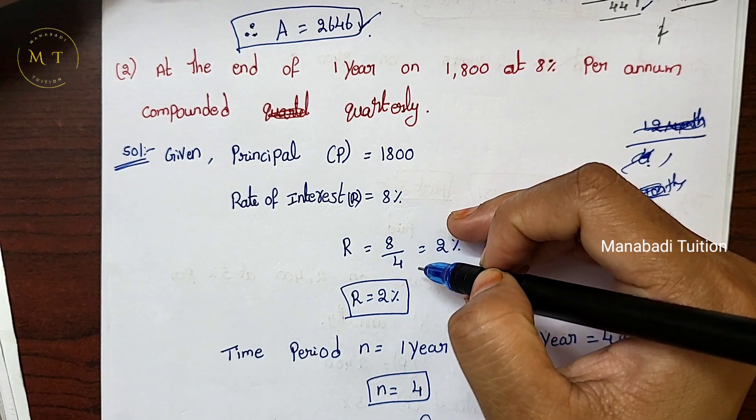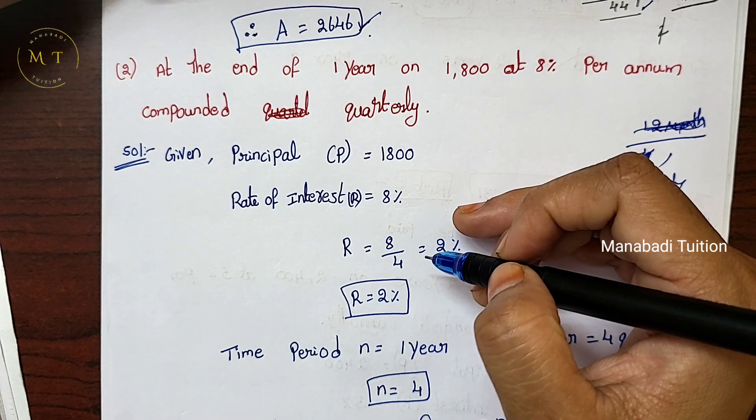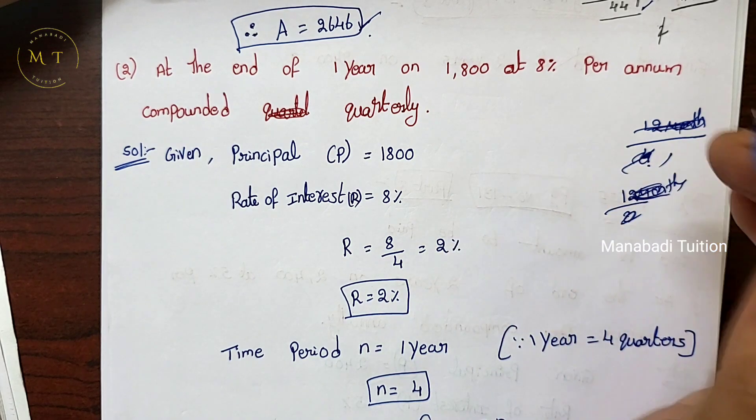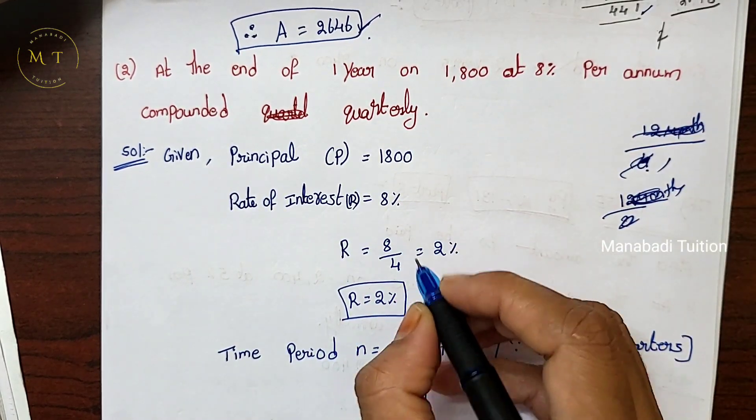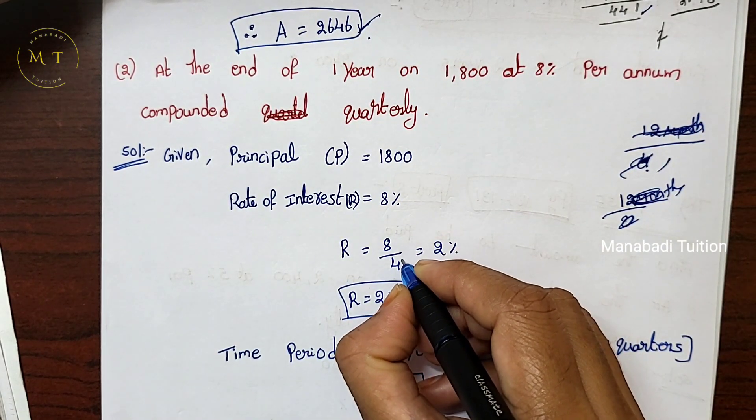For quarterly compounding, the rate per quarter is the annual rate divided by 4. For half year, divide by 2. The number of periods n for one year compounded quarterly is 4.